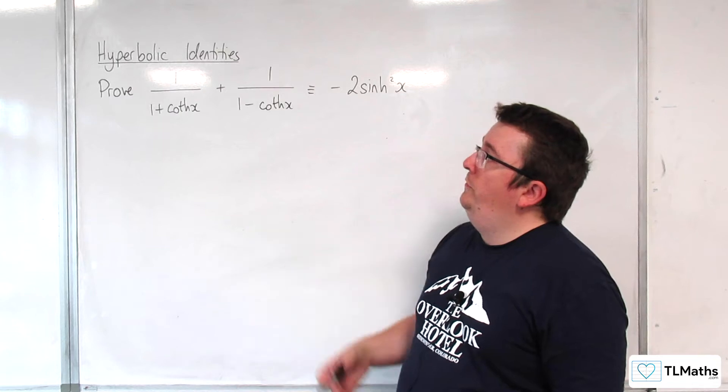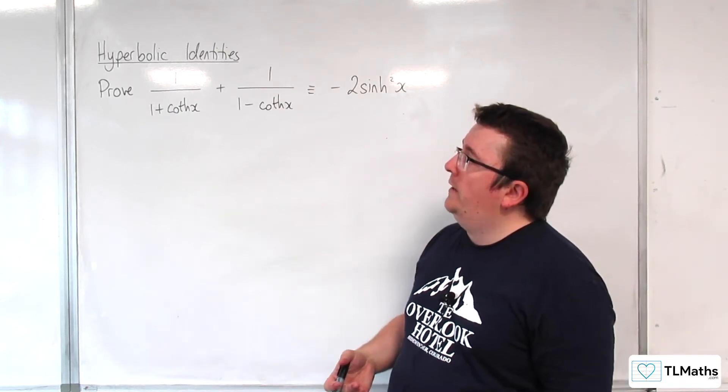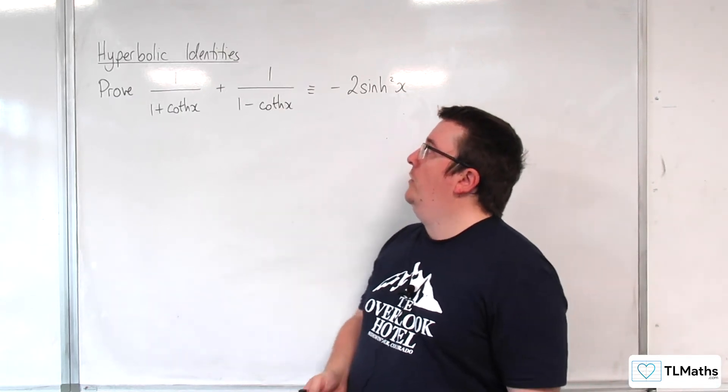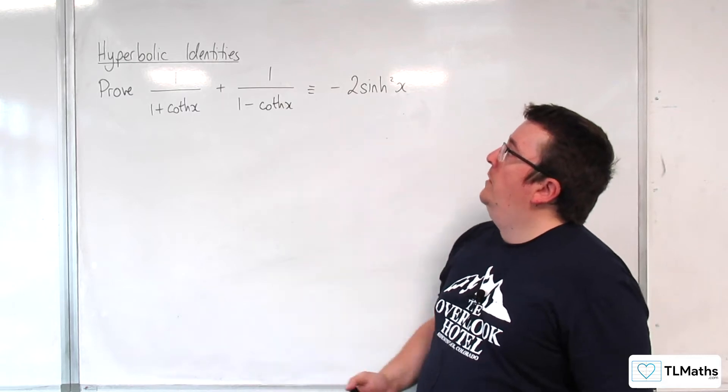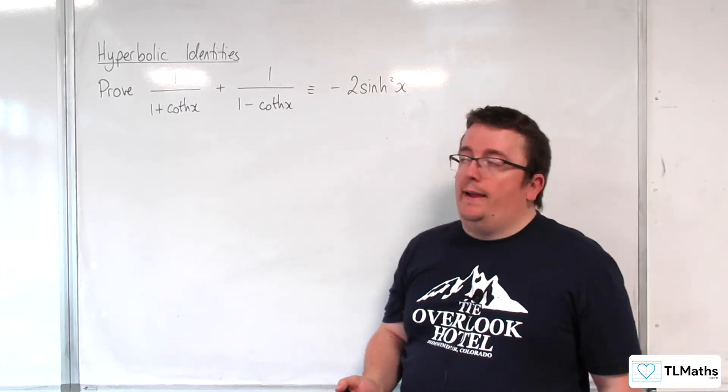In this video, we're going to prove that 1 over 1 plus coth of x plus 1 over 1 minus coth of x is equivalent to minus 2 sinh squared x.